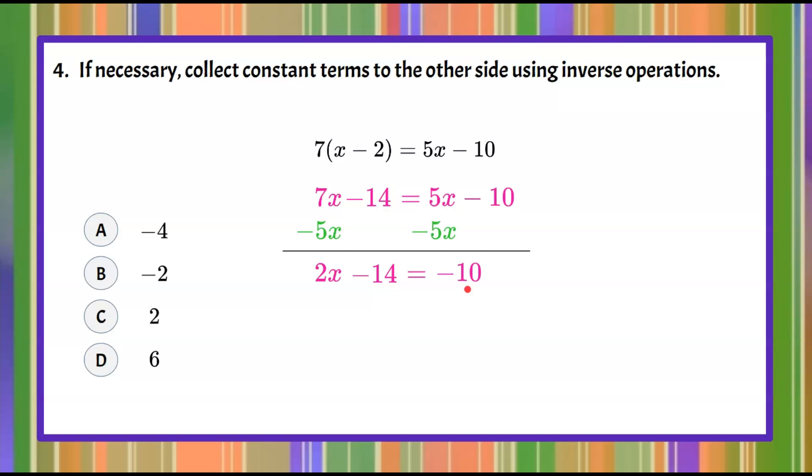Let's move on to step four. If necessary we want to collect constant terms to the other side meaning we have our number values. So negative 14 and negative 10 we want to move negative 14 to the right so that we have our variable x here and then our number term our constant on the right. So to do this we're going to use inverse operations. So the inverse or opposite of negative 14 is add or positive 14 and what we do to one side we must do to the other.